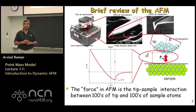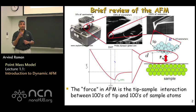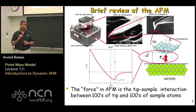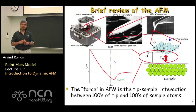In an atomic force microscope, what we try to do is measure forces between these hundreds of atoms at the very end of the AFM tip and a few hundreds of atoms on the surface of the sample. The essential physics in atomic force microscopy is contained in the tip-sample interaction forces that develop between the tip and the sample. It is due to these forces that we are able to image features and surfaces at very high resolution.